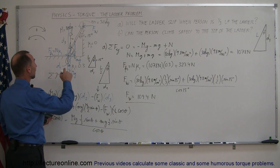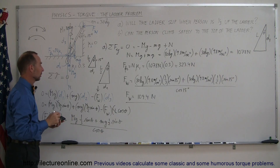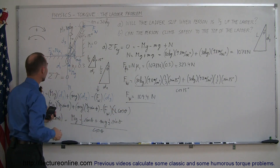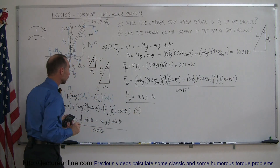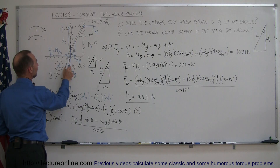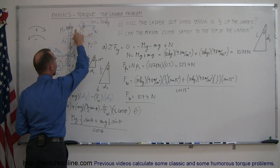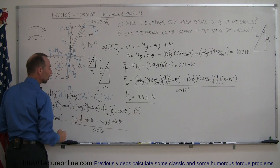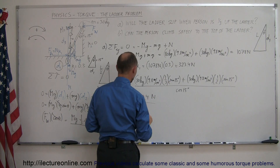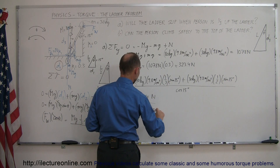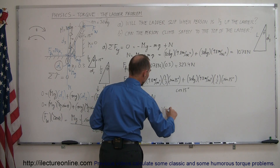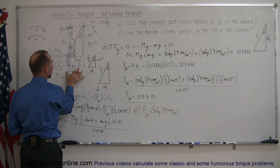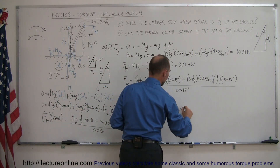Now what would happen if the person climbs all the way to the very top? What changes is that distance D1 will change. For part B, instead of the person being one-third of the ladder, the person will now be completely at the top of the ladder, which means D1 now becomes L times the sine of 15 degrees — three times the previous distance.